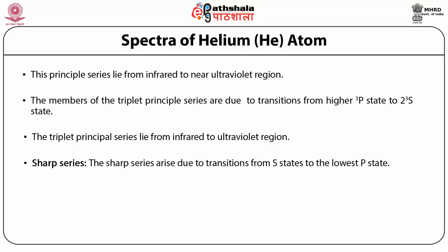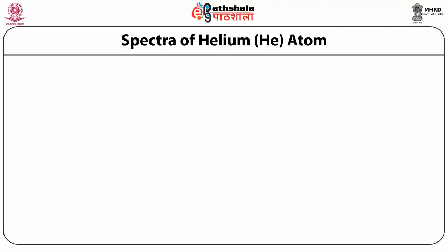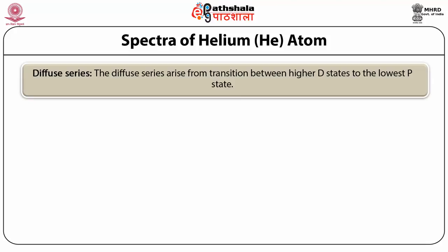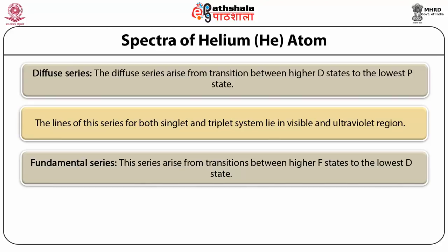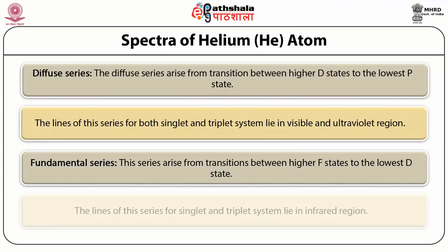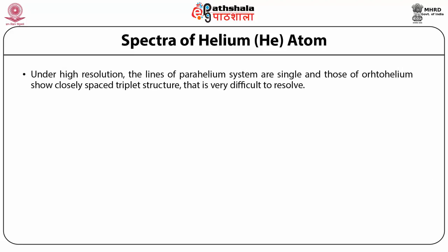The sharp series arises from transitions from s states to the lowest p state; lines of singlet and triplet sharp series lie in the visible and ultraviolet region. The diffuse series arises from transitions from higher d states to the lowest p state, with lines for both singlet and triplet systems in the visible and ultraviolet. The fundamental series arises from transitions from higher f states to the lowest d state, with lines in the infrared region. Under high resolution, lines of parahelium are single while orthohelium lines show closely spaced triplet structure that is very difficult to resolve.